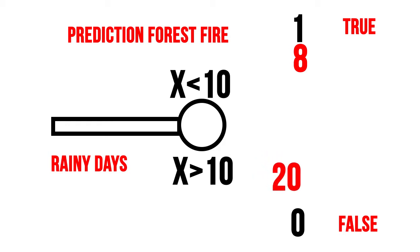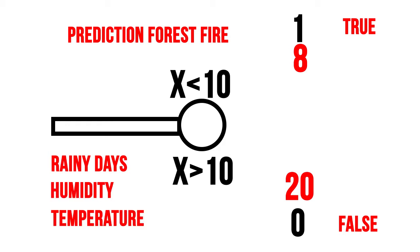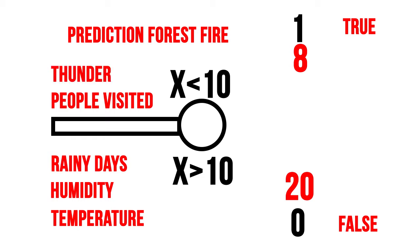Now with more complex neural networks, there are many, many layers of such neurons that allow making extremely complex predictions. In that same example, we could have data for the humidity, temperature, amount of people that visited the forest, amount of thunderstorms, etc. All these elements would trigger different neurons and based on their outputs, we could make better predictions.